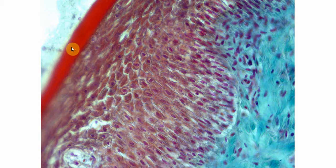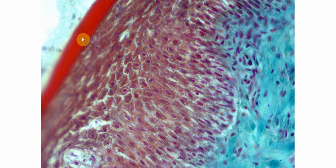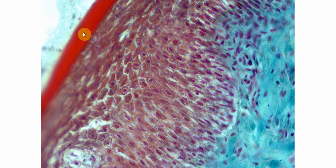The topmost and the last layer is the cornified layer, in which the cells are extremely flattened and all the organelles are lost, including the nucleus. No nucleus is visible here. The cells are filled with a material known as keratin. Because no nucleus is visible, this pattern is referred to as orthokeratinization.